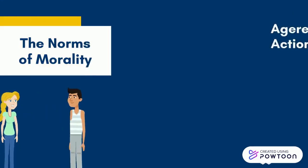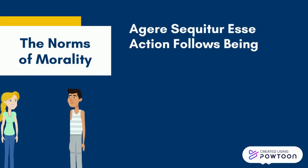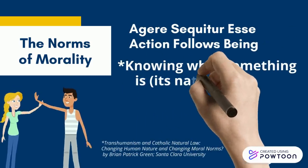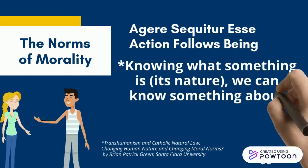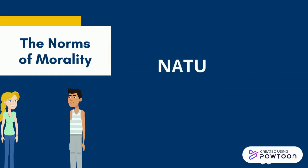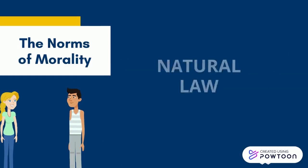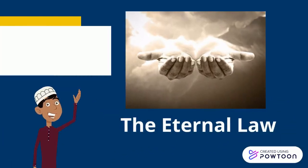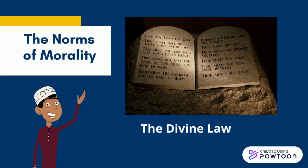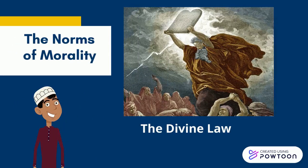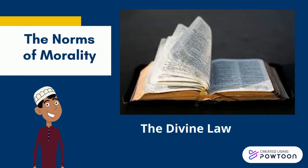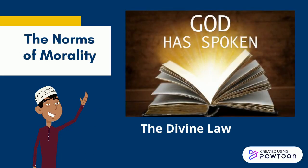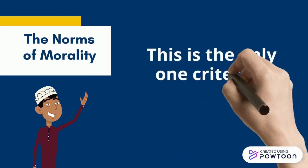Let us now move on to the norms of morality. We have the Latin phrase agere sequitur esse — knowing what something is so we can know something about how we should act. It is also called the natural law. The eternal law, also called the divine law, was perceived as deriving from a transcendent source such as the will of God. Divine laws are those that God, in His grace, has seen fit to give to us, and was considered as the ultimate norm of morality because it is as if God has spoken. This is the only criterion for scholastic philosophers.